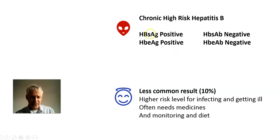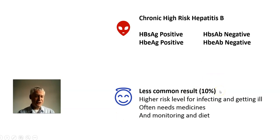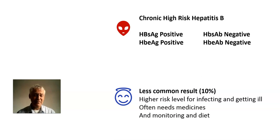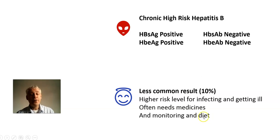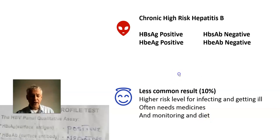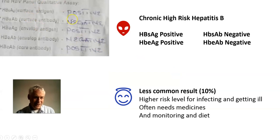High-risk Hep B looks a little different. You've got the surface antigen positive, the E antigen positive too, and the surface antibody and envelope antibody are negative. About 10% have the E antigen on top, giving a viral level that's often above a million, 10 million, 100 million, even a billion. Once someone gets to 30 years old, we usually give them medication. Annual or six-monthly monitoring, and again, crucial advice on avoiding alcohol, drugs, and getting really overweight. Profile panel: positive for surface antigen, positive for E antigen.